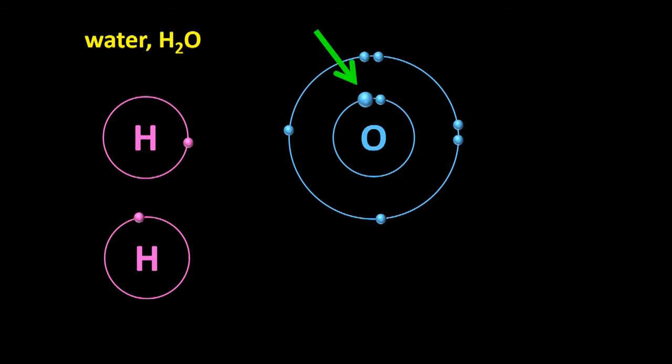Oxygen has two electrons in its inner shell and six electrons in its outer shell. However, the outer shell can hold a maximum of eight electrons. If a hydrogen atom crashes into it, the hydrogen atom's nucleus attracts this electron into its electron shell, and the oxygen atom's nucleus attracts this electron into its outer shell, and the two atoms form a bond.